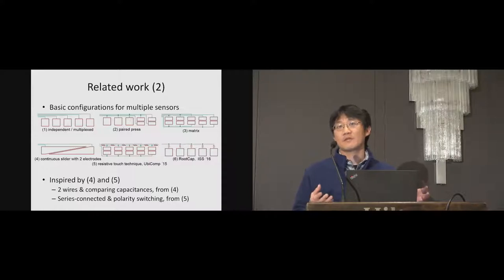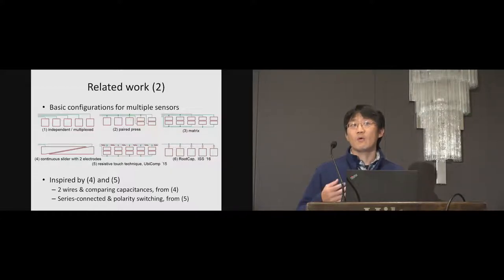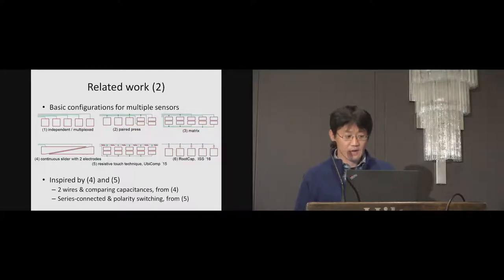Unlike these smart techniques, there are basic and traditional configurations to support multiple sensors. Example one shows that each electrode has a different wire to connect to the sensing circuit. Interleaved trace technique and matrix technique can reduce the number of wires. Example four shows a touch-based slider that compares two capacitors formed with the finger. Example five shows resistive touch sensors where half of electrodes are series connected between wire resistors, and three wires are needed to connect to the sensing circuit.